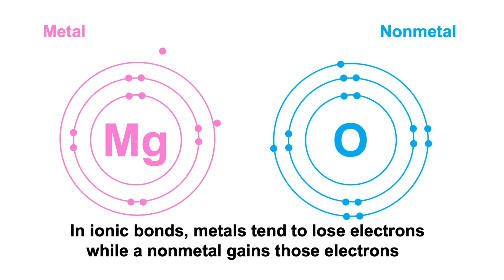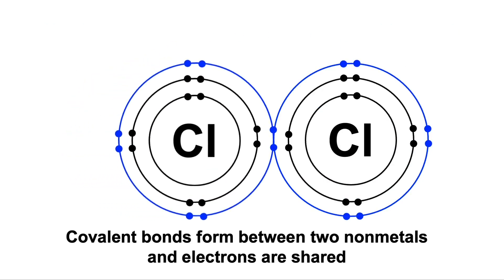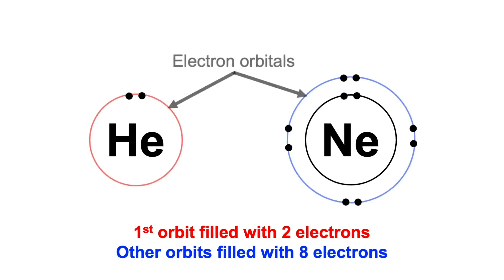Cause ionic, donated. Covalent, share that. Fill orbit, two or eight of it. Here we're making different bonds with the elements. Yeah.